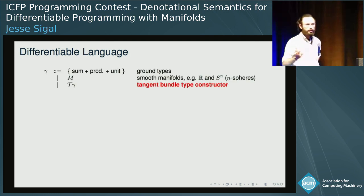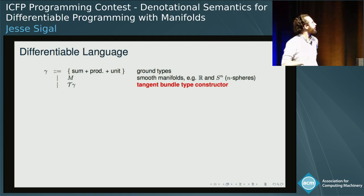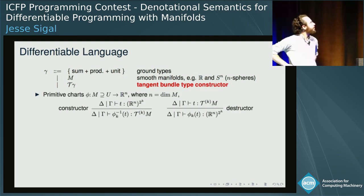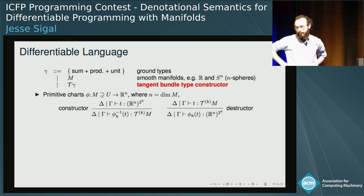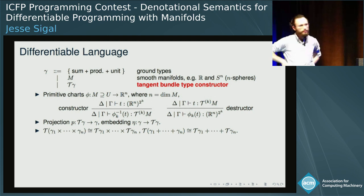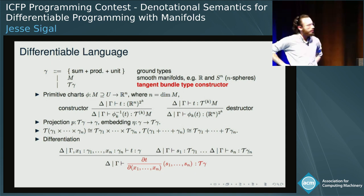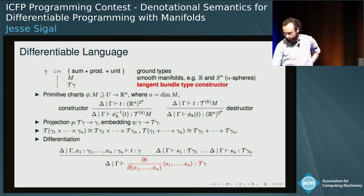So what's the differentiable language? It's a first-order language to avoid really hairy mathematical difficulties. It has finite sums and products, unit types, and the base types are smooth manifolds — for example, reals or n-spheres. The real important bit of the language is the type constructor T, the tangent bundle type constructor. This type constructor has constructors and destructors between reals for the manifolds themselves and iterated tangent bundles — and these must mathematically be partial. Each tangent bundle also has projection and embedding functions, and there are relationships for products and sums. The differentiation rule reads: differentiate the term T simultaneously with respect to variables X1 to Xn at the point S1 to Sn, and the tangent bundle type constructor appears notably as the result.